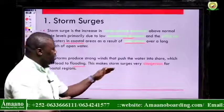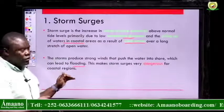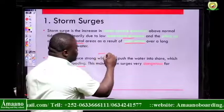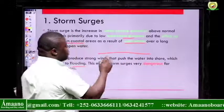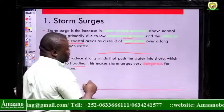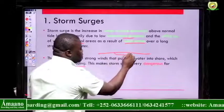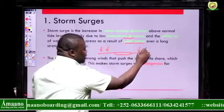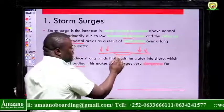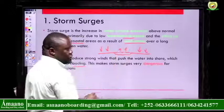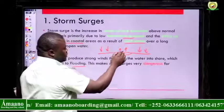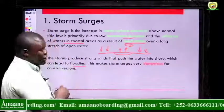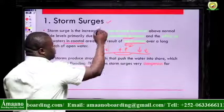Storm surges are very dangerous for coastal regions. A storm surge occurs when there is a difference in wind pressure — an area of low pressure causes the surrounding higher pressure to force that part of the water to rise. Because of the strong winds, the water is then blown towards the shore, and that is what causes the storm surge.